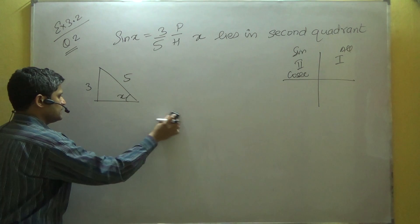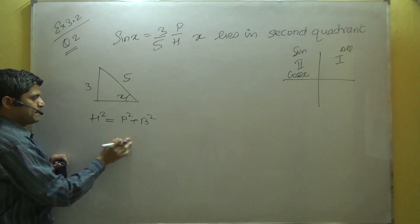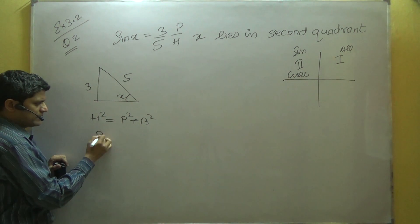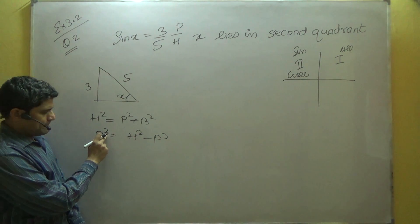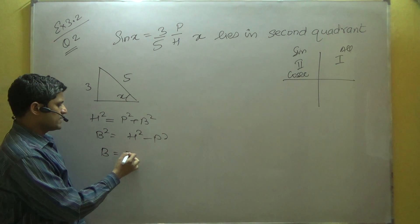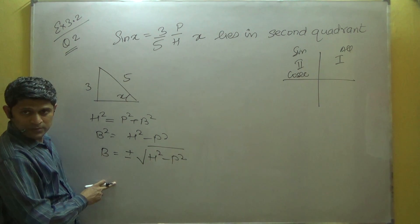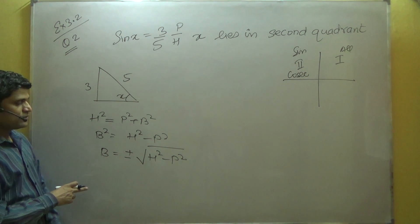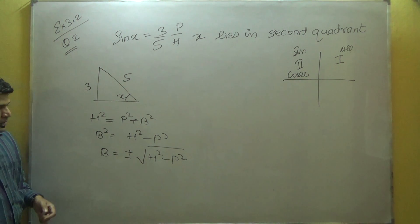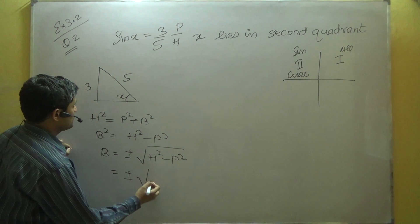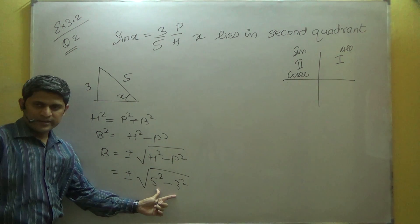Why plus or minus? Because h squared equals p squared plus b squared. Substituting the h value and simplifying, b squared equals h squared minus p squared. Since we take the square root, we must write plus or minus. We have to decide which sign to use. This is the best way to solve it.